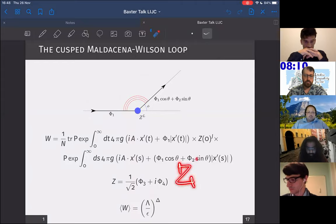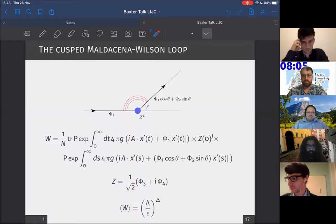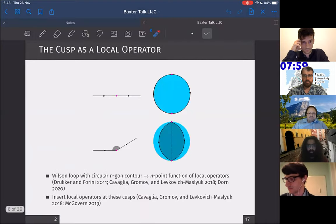In the case where we have Z to the power L, where L is equal to zero, then we have the cusp anomalous dimension, and if we have L non-zero, then we have the overall scaling dimension. You can ask me, why do you want to study cusps?